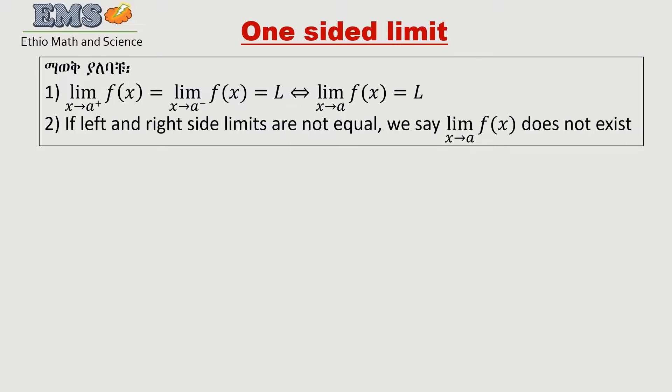This is an example. Find the limit of the square root of 3 minus x as x goes to 3. I will work out both one-sided limits.